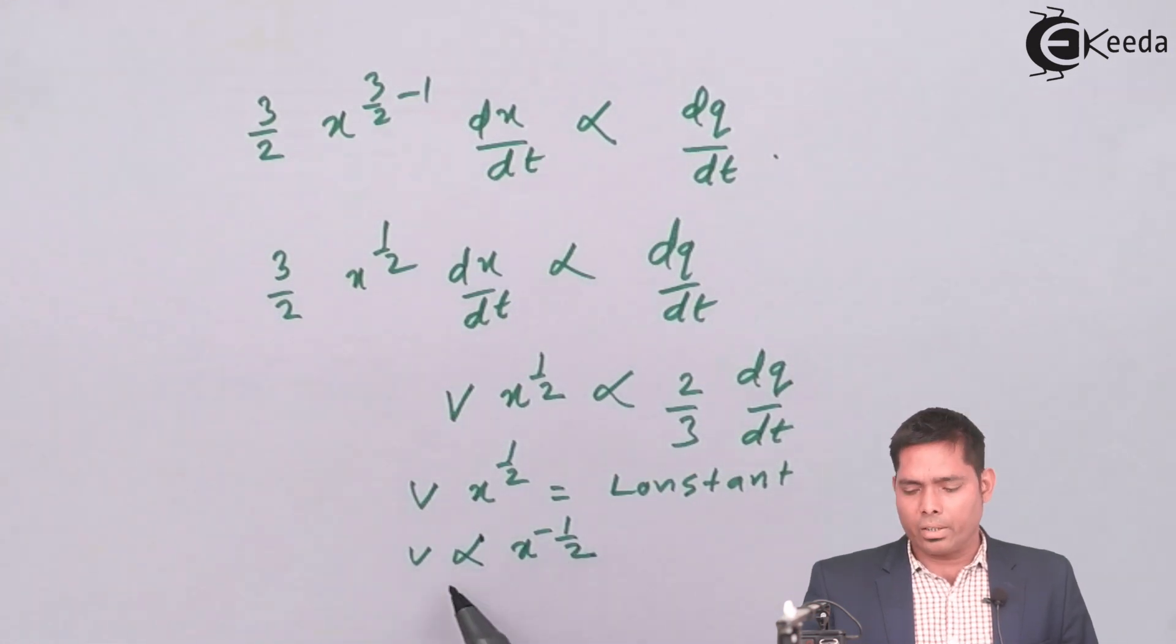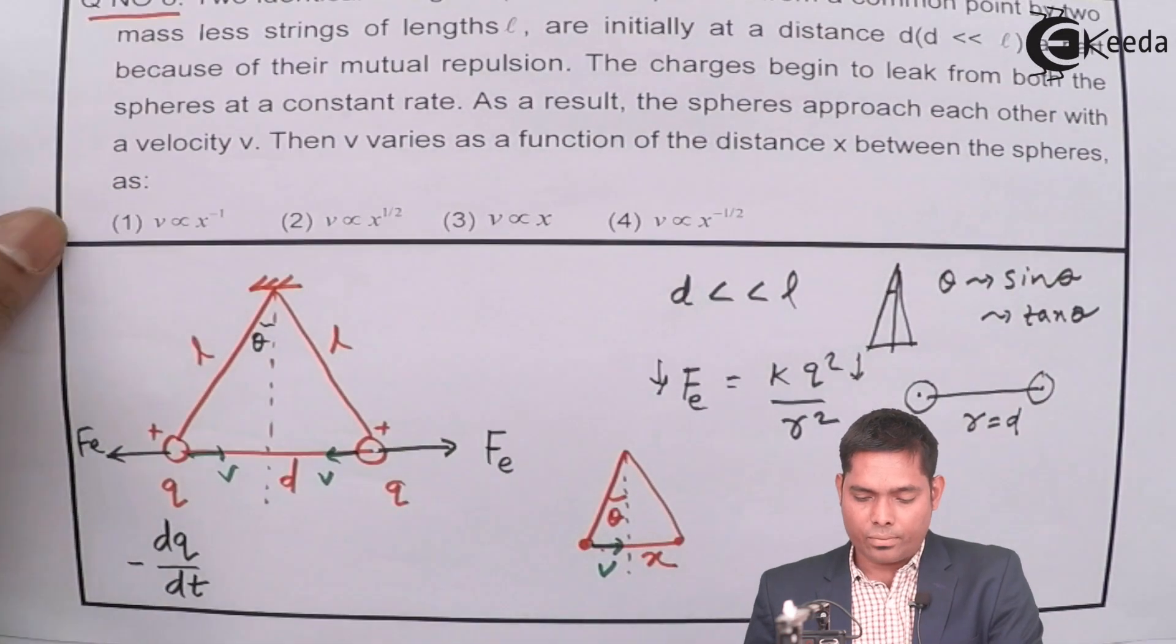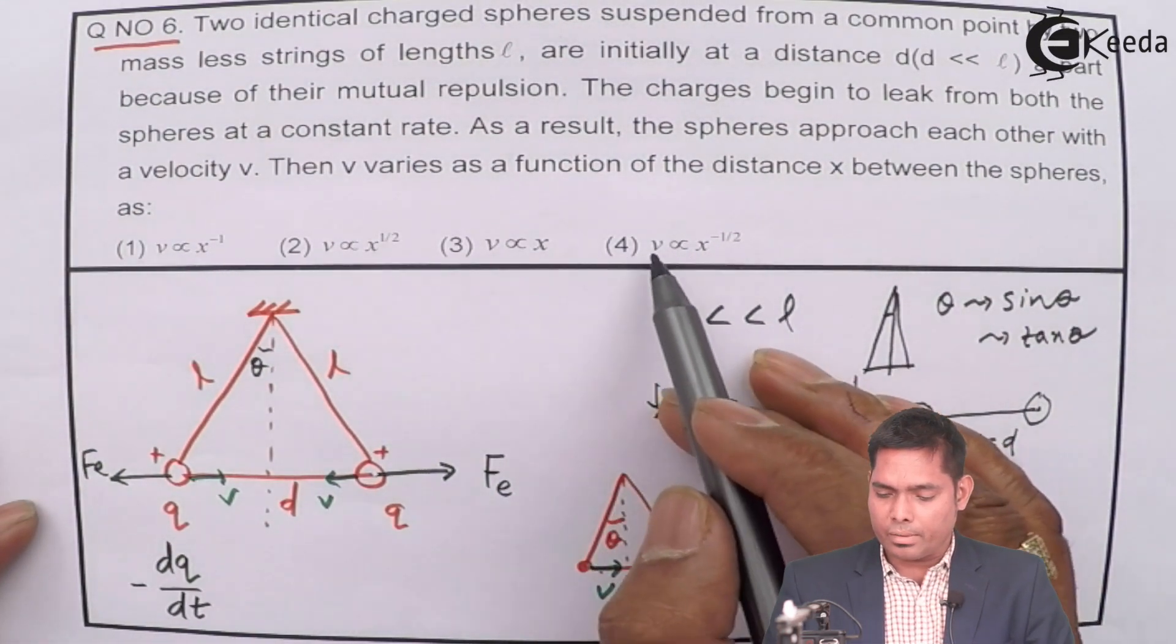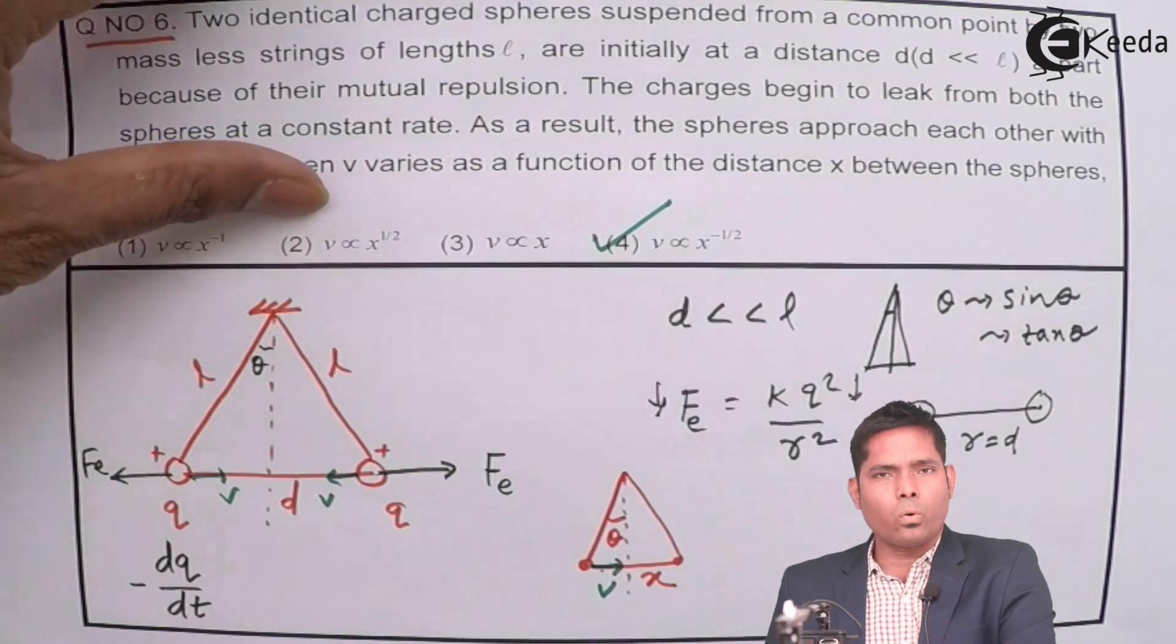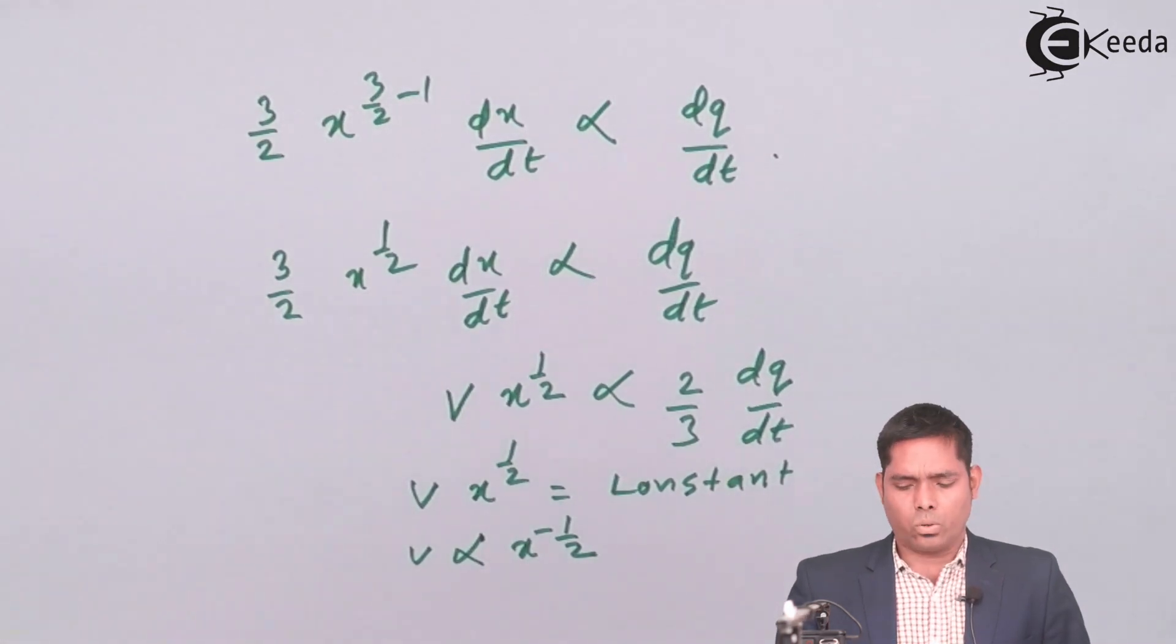This is what you are getting here. So, the velocity as a function of X is X to the power minus half. V as a function of X, V is proportional to X to the power minus half. So, option number 4 is the right answer to this question. Thank you.